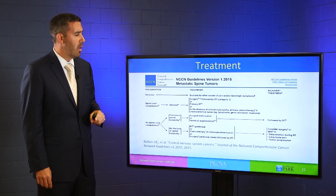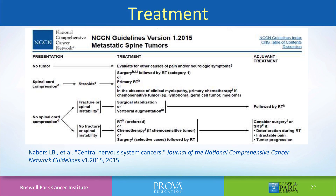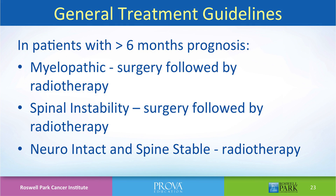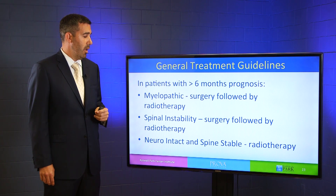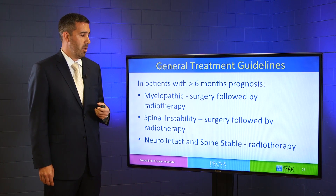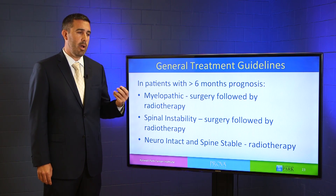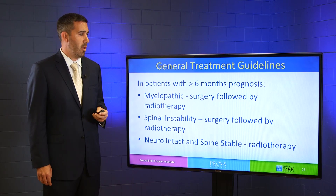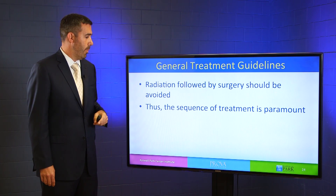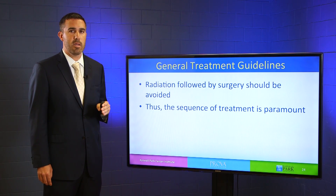This slide represents the NCCN national guidelines algorithm for treatment of spinal metastatic disease. In patients with greater than six months prognosis who are myelopathic — meaning hyperreflexia, clonus, or lower extremity weakness — surgery followed by radiation therapy is the recommended treatment. Patients with spinal instability should undergo surgery followed by radiotherapy. Patients who are neurologically intact with no spinal instability should undergo radiotherapy alone. In any case, surgery after radiation therapy should be avoided whenever possible. The sequence of events is just as important as the treatment being delivered in spinal metastatic disease.